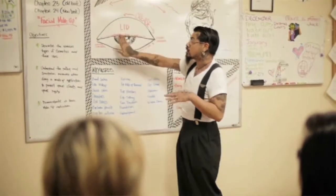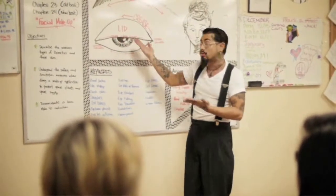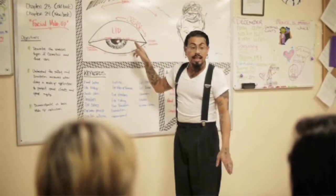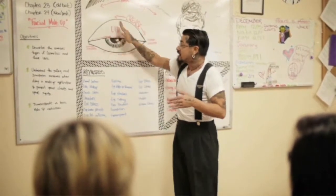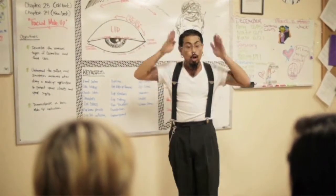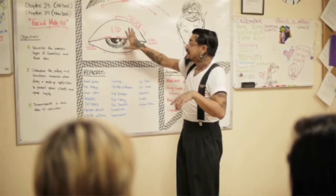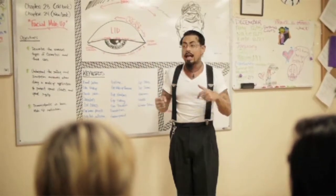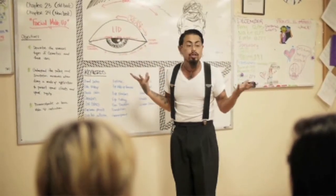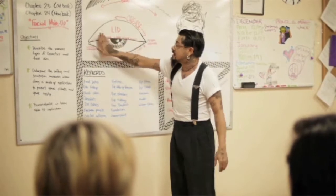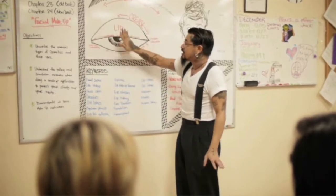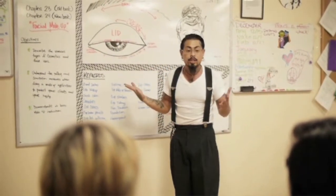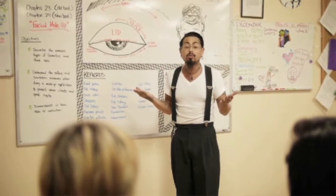The next part of the structure that we apply makeup to is the lid — the eyelid, the flap of skin that opens and closes when you blink. This is where you can pretty much showcase any color, any texture. This is an area that allows you to experiment and be as creative as you want to be.